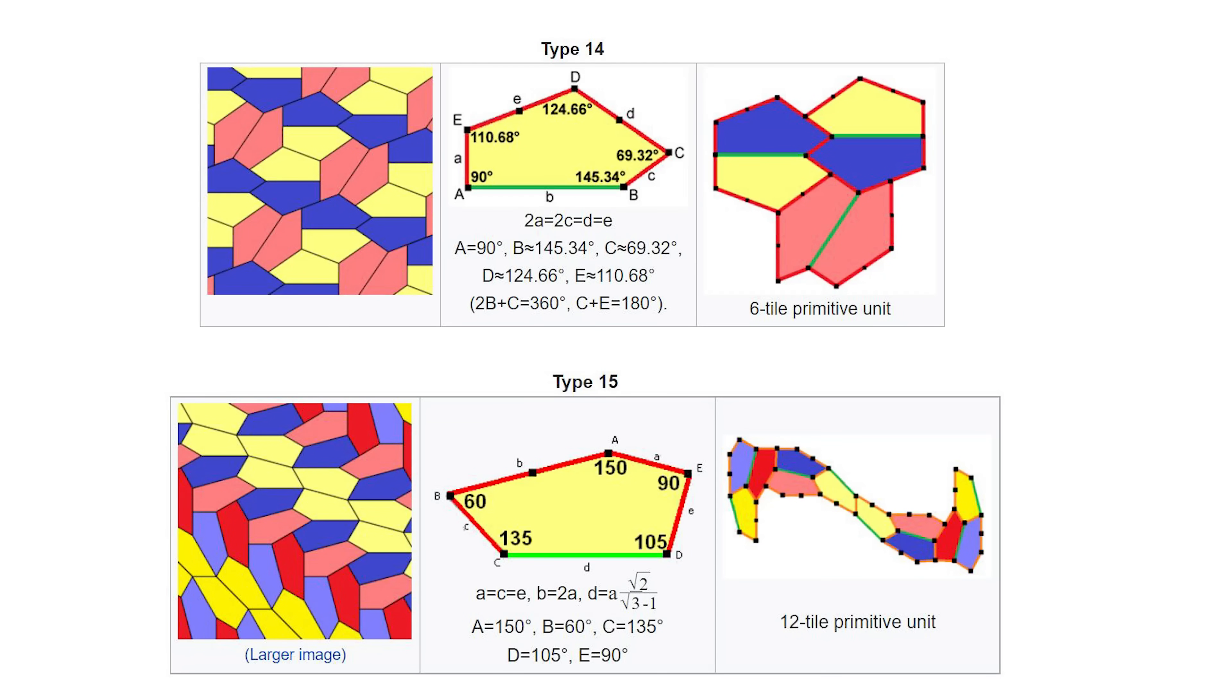After Marjorie Rice, there were two more that were discovered, with the latest being in 2015. And we actually still don't know if there are more than 15 types of convex pentagons that tessellate together. Maybe one of you will discover there's actually more.